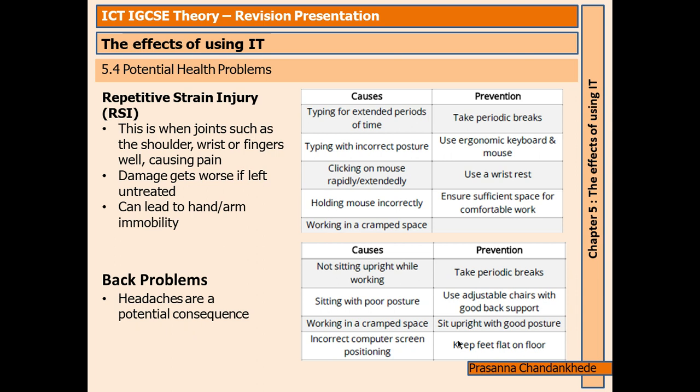Further prevention of RSI and back problems: use an ergonomic keyboard and mouse, use a wrist rest, and ensure sufficient space for comfortable work. For back problems, causes include not sitting upright, poor posture, working in a cramped space, and incorrect computer screen positioning. Prevention includes using adjustable chairs with good back support, sitting upright with good posture, and keeping feet flat on the floor.